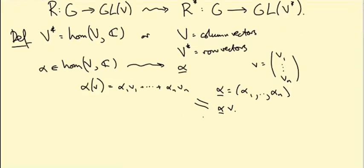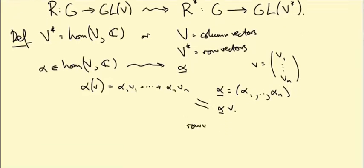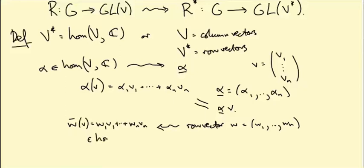Going back, if I have a row vector W equals W_1 up to W_n, then I get W bar which is the linear map that sends V to W_1 V_1 plus dot dot dot plus W_n V_n. So that's an element of Hom(V, C). So this is a bijection. It shows us that we can really think of Hom(V, C) as row vectors.